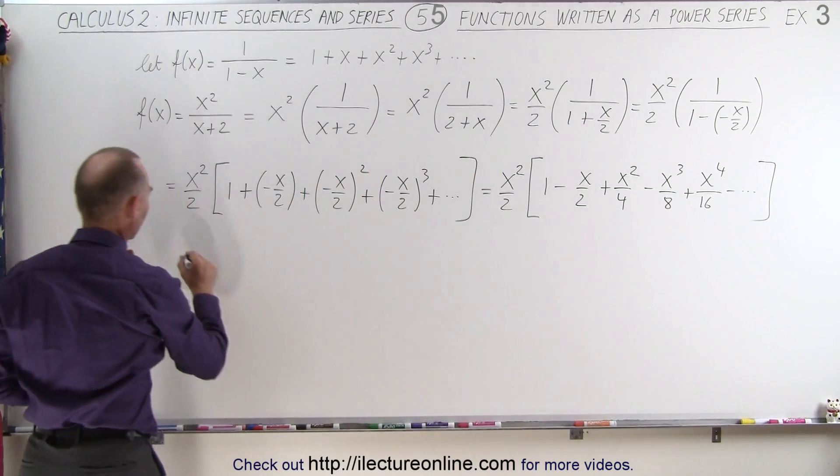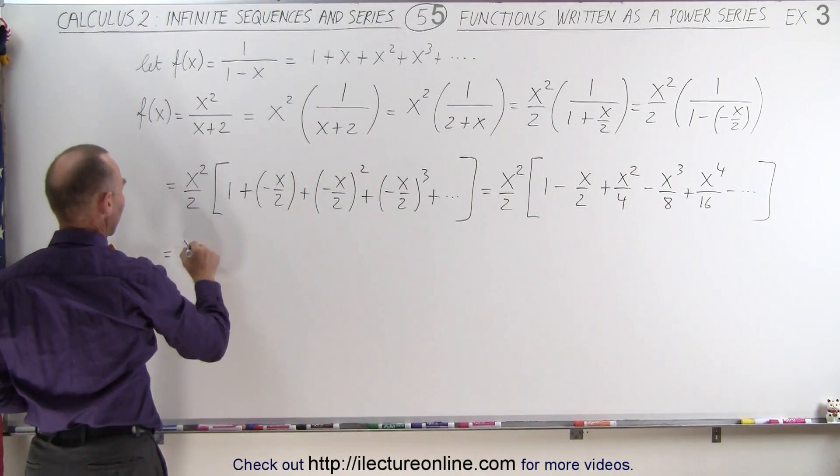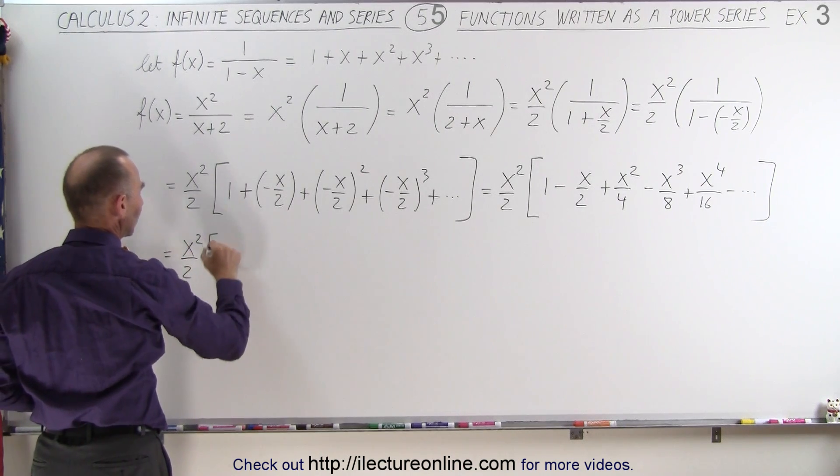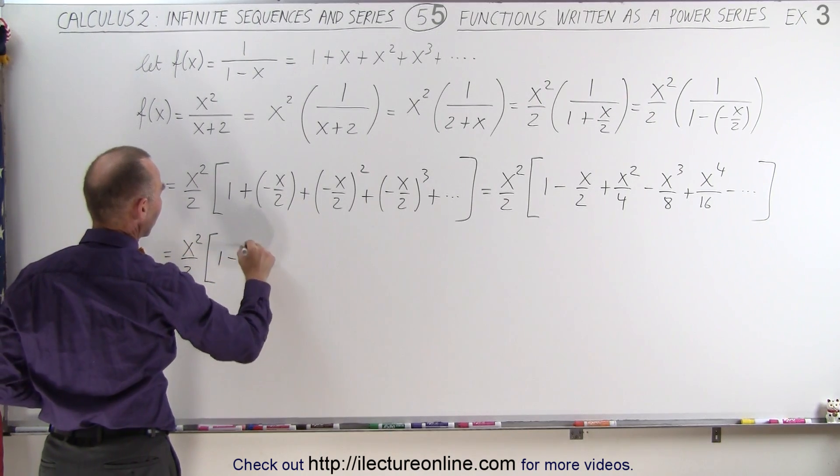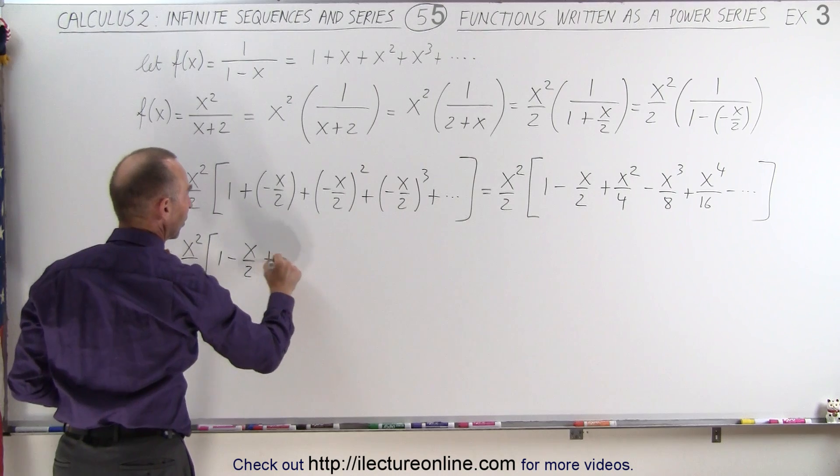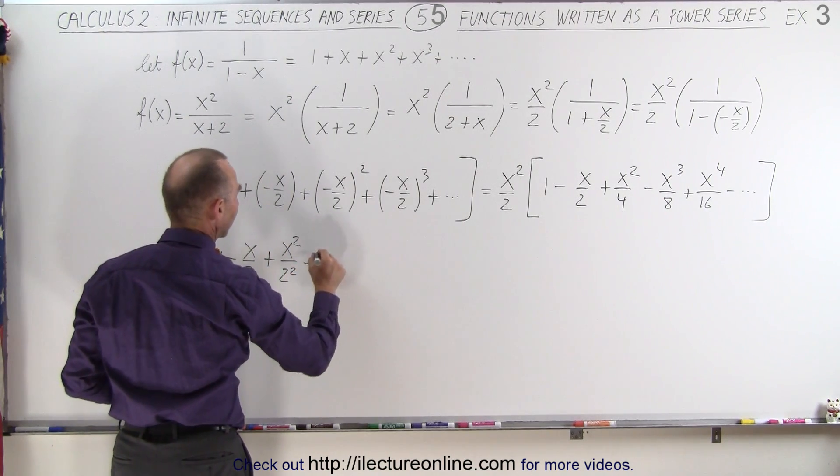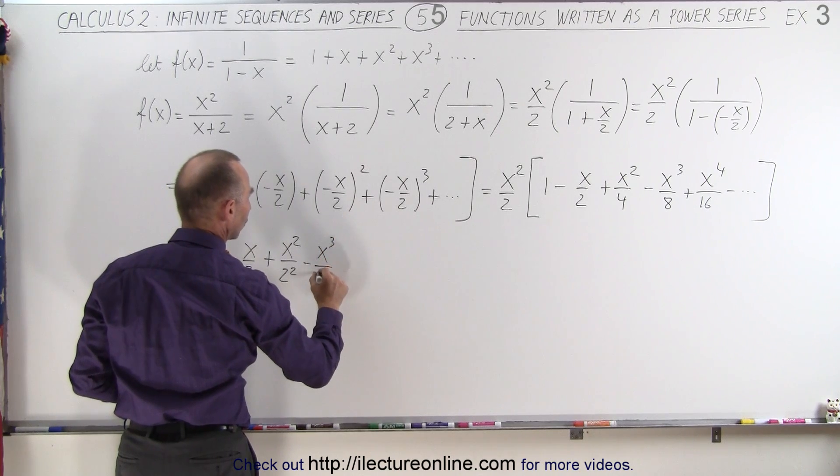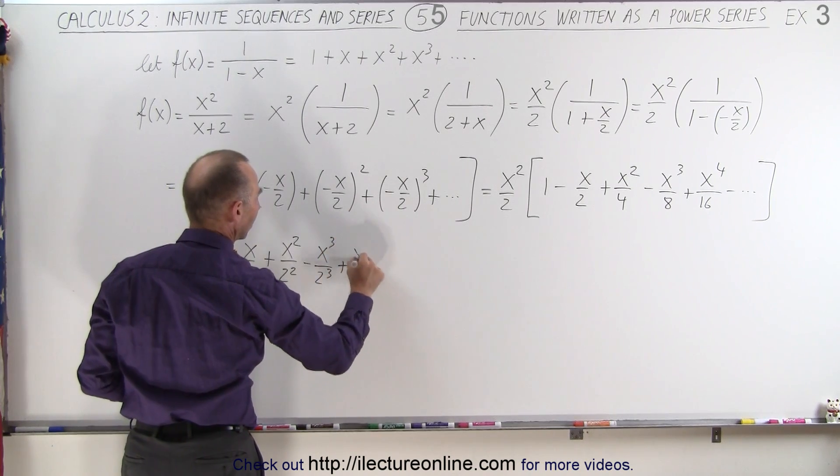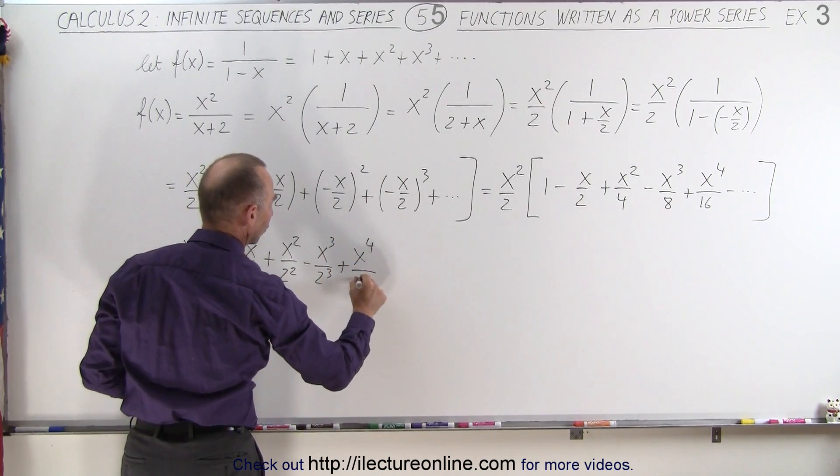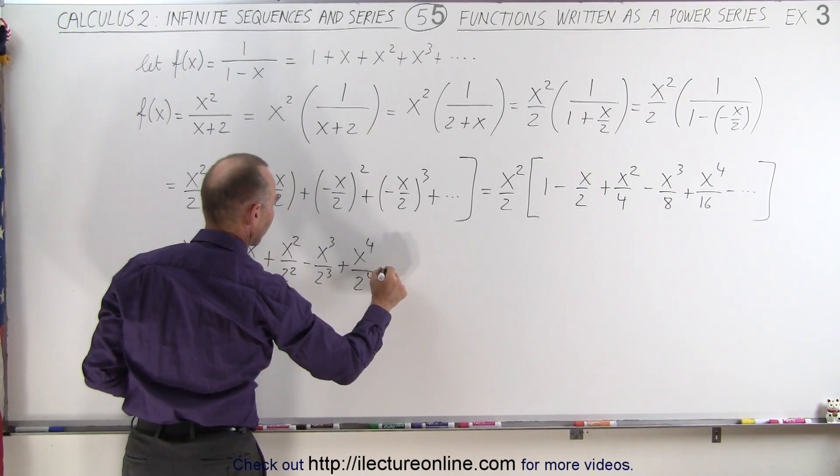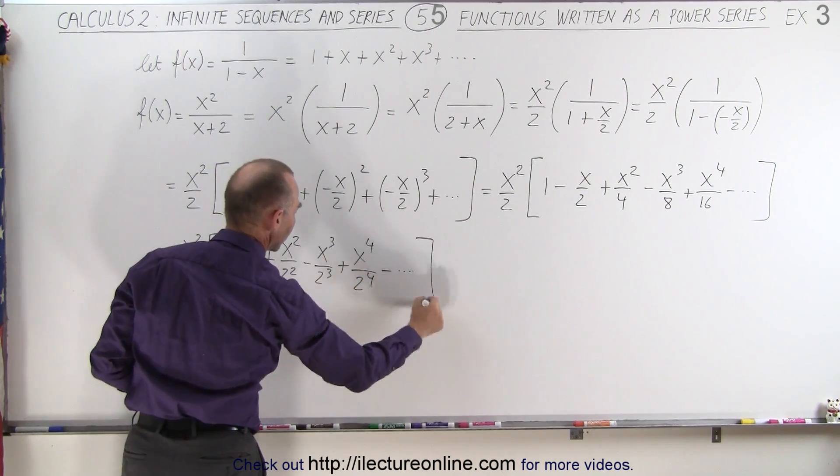So this equals x squared divided by 2 times 1 minus x over 2 plus x squared over 2 squared minus x cubed over 2 cubed plus x to the fourth over 2 to the fourth minus, okay.